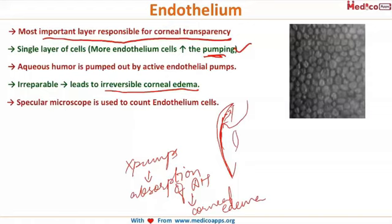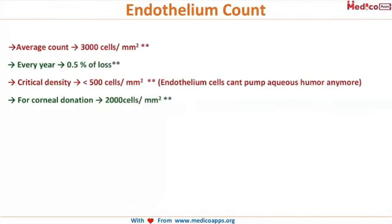To count endothelial cells, look at the hexagonal structures in this picture — these are the endothelial cells of the corneal endothelium. This count is of utmost importance because the cornea requires a minimum number of endothelial cells to maintain transparency. Cell counting is done by an instrument called the specular microscope, which gives us the cell density. The average cell count is about 3000 endothelial cells per millimeter square of cornea.